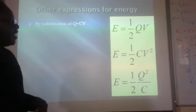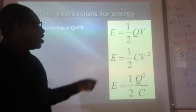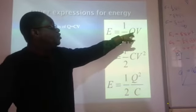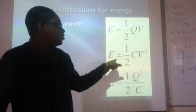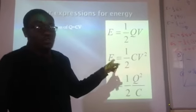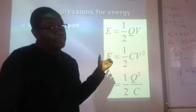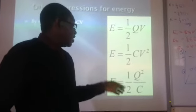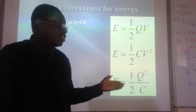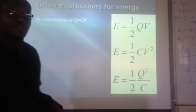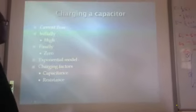Since Q = CV, we can substitute for Q in the energy equation to get energy stored = ½CV². Alternatively, substituting for V gives energy stored = ½Q²/C. So the energy stored in a capacitor can be expressed as ½QV, ½CV², or ½Q²/C.